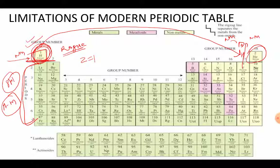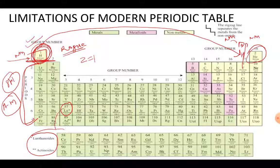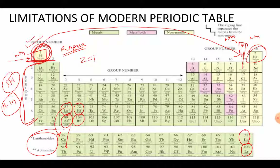The second very important limitation is: why are the two rows of lanthanoids and actinoids kept separate below the periodic table? Why are they not a part of the main table? As we know, lanthanum is element 57, so element 58 comes in the separate row until 71 is filled there, and 72 goes back in the main table. And actinium is 89, then 90 comes down until 103 is filled in the row, and 104 goes in the main table.